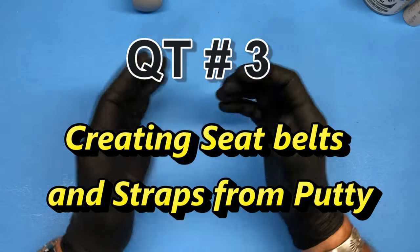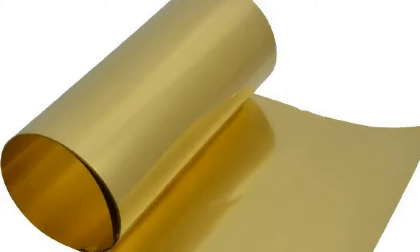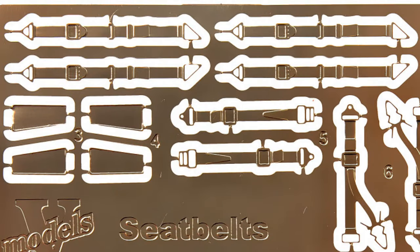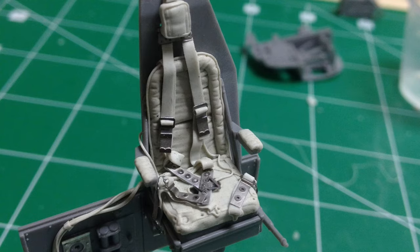You can make straps and seat belts or harnesses out of different materials. You can use sheet brass, lead foil, even paper, and some manufacturers these days will include already-made seat belts in their kits in their photo-etch parts.